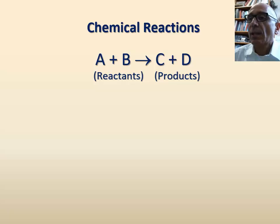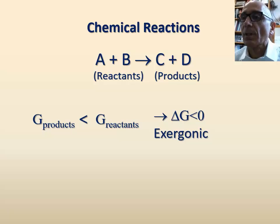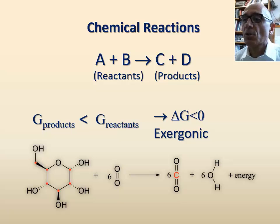A chemical reaction in which the level of free energy in the products is smaller than that of the reactants is known as exergonic reaction. Since there is transfer of energy from the system to the surrounding, therefore the difference in free energy between products and reactants in an exergonic reaction is negative. An example of exergonic reaction is the oxidation of glucose into CO2 and H2O.